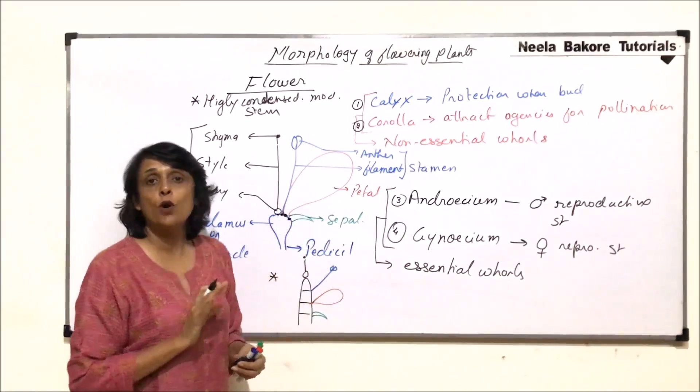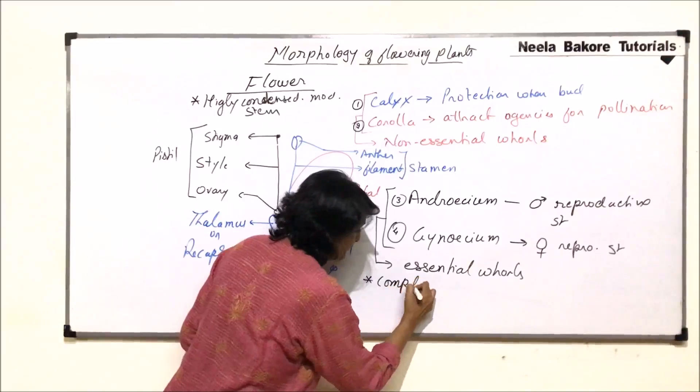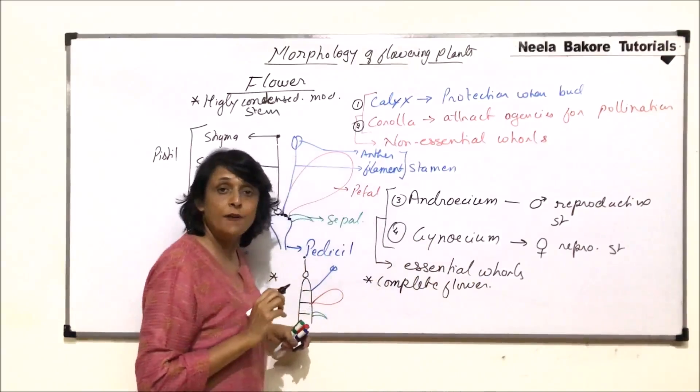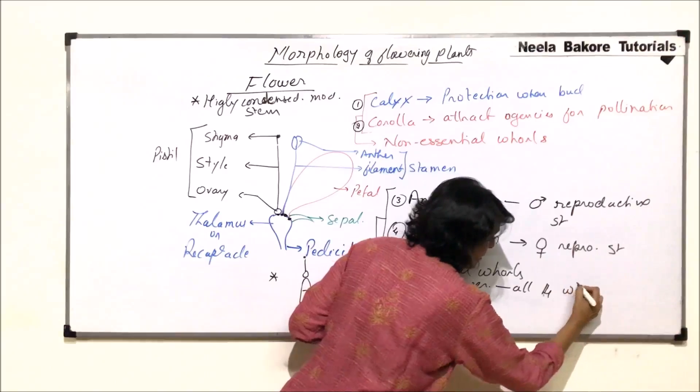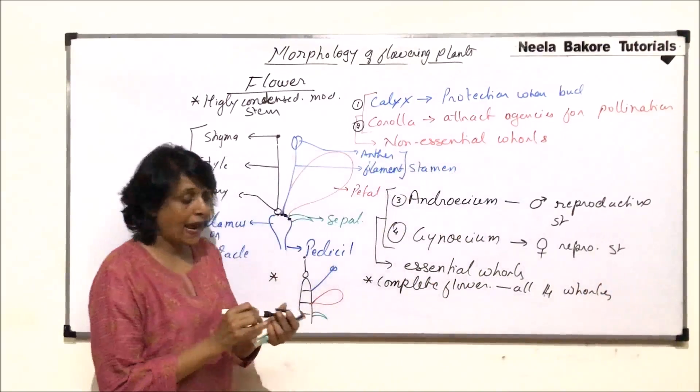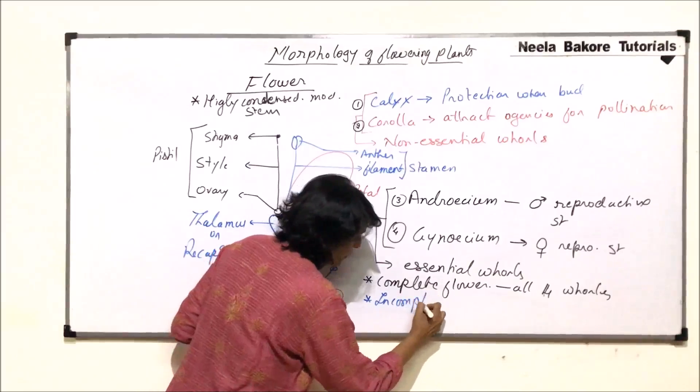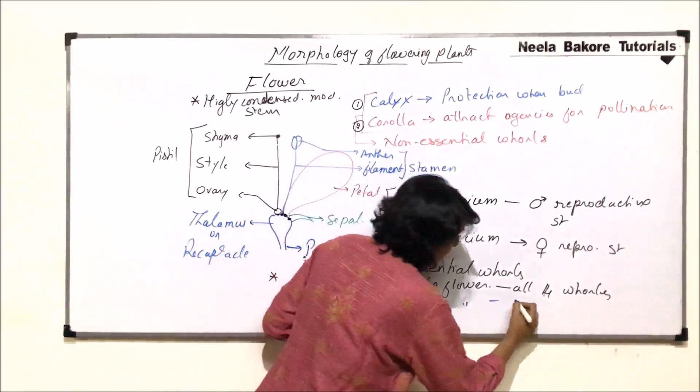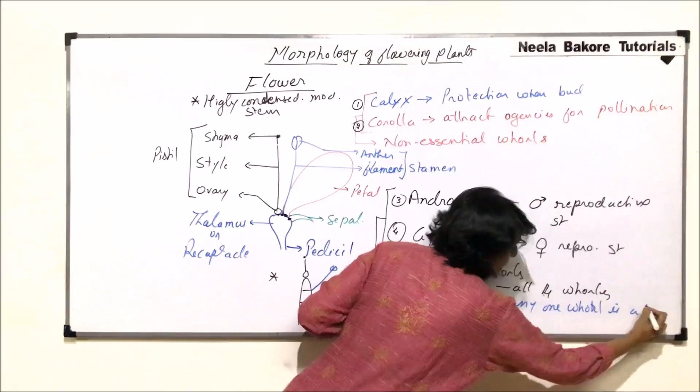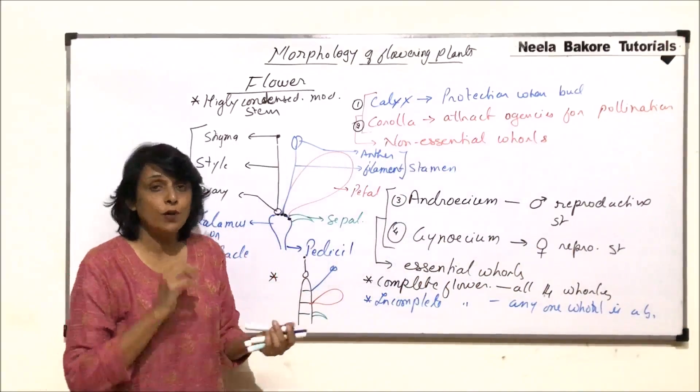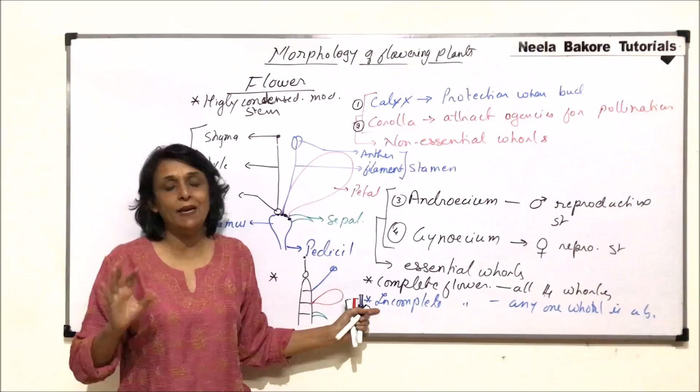If all these four whorls are present, then the flower is termed as complete flower. Complete flower word when we use, that means all four whorls, all four whorls are present. And if anyone is missing, then that would be called incomplete flower, where any one whorl is absent. If the flower is complete, all four are going to be there. Incomplete, any one can be absent.